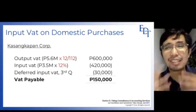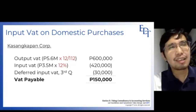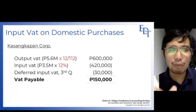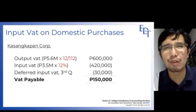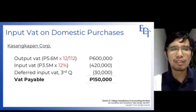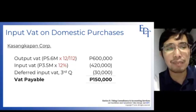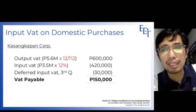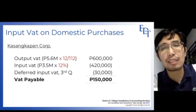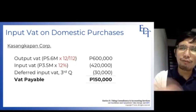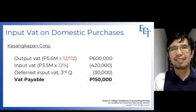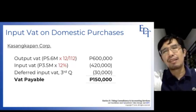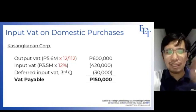We also discussed that if input VAT exceeds output VAT and it does not come from export sales, you cannot get a refund — you carry it over to the next quarter. The deferred input VAT from the third quarter is 30,000. So: 600,000 less 420,000 less 30,000 = 150,000 VAT payable to be remitted to the BIR.